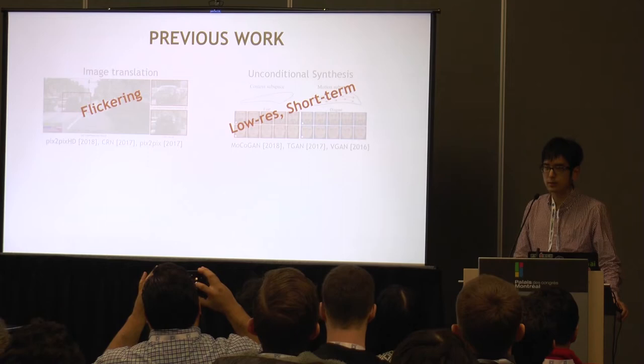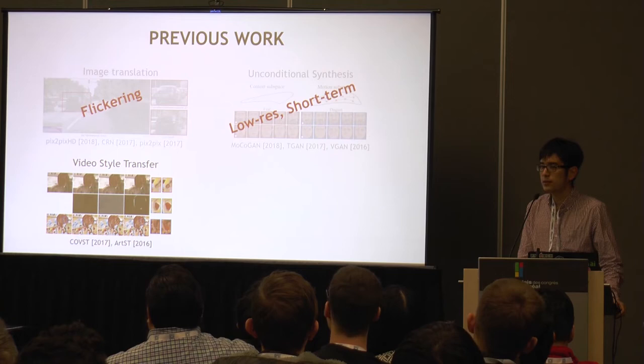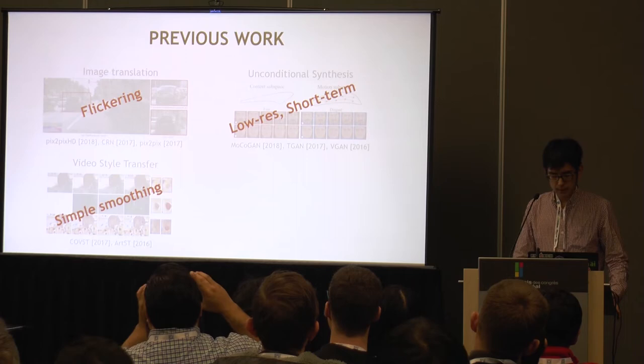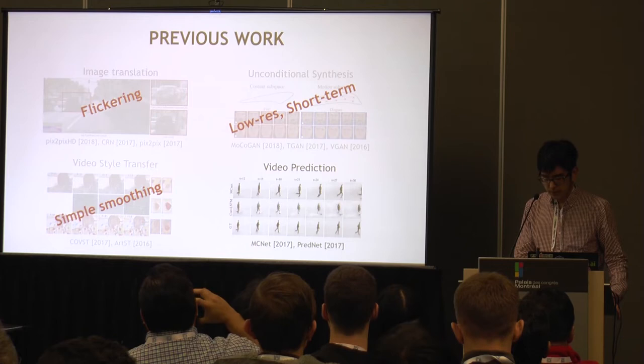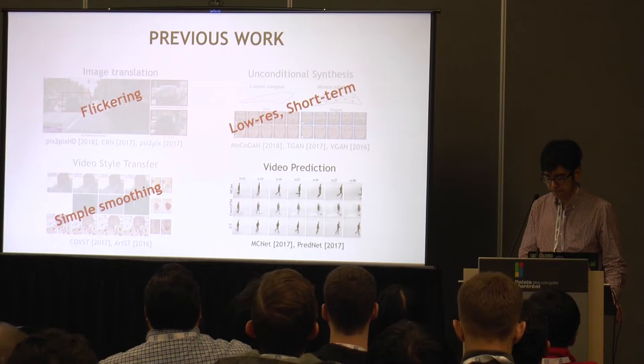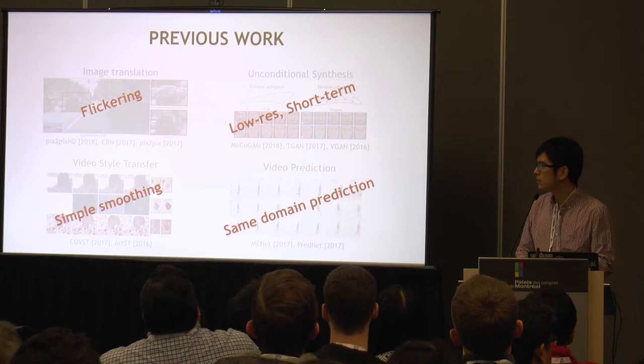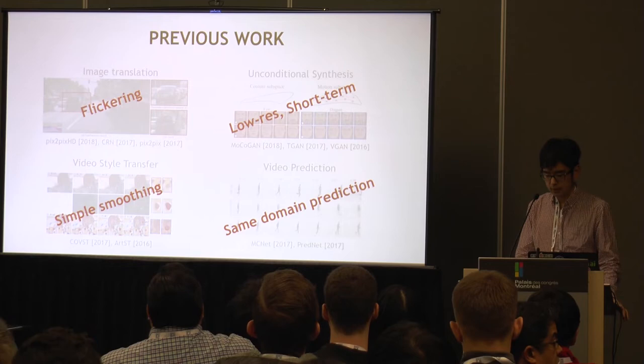The next is video style transfer, which transfers the style of a painting into a video. It applies some simple temporal constraints, but it's usually still not enough for our purpose. And finally, there's video prediction, which tries to predict the next frame in a video. However, in that case both inputs and outputs are photorealistic images, while in our case we want the input to be just some high-level representations. So it's a different domain synthesis.